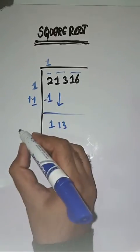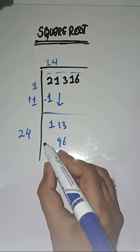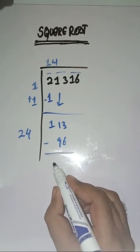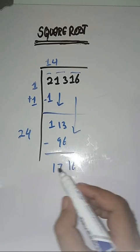1 plus 1 which is equal to 2. Now we will take a number 4. 24 times 4 is 96, minus that we get 17. Next pair we have is 16, we will also bring it down. 24